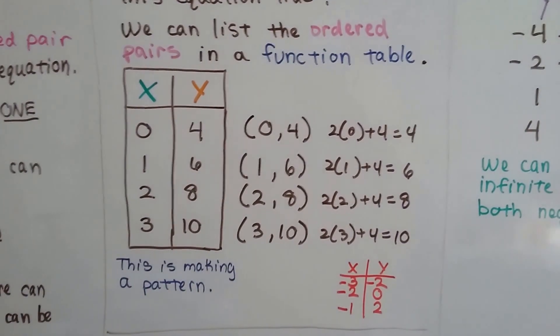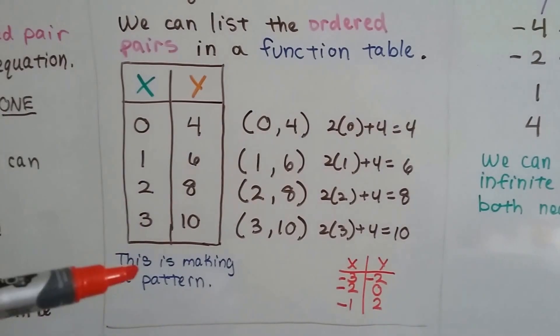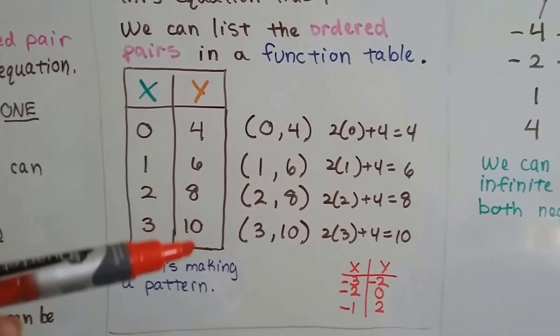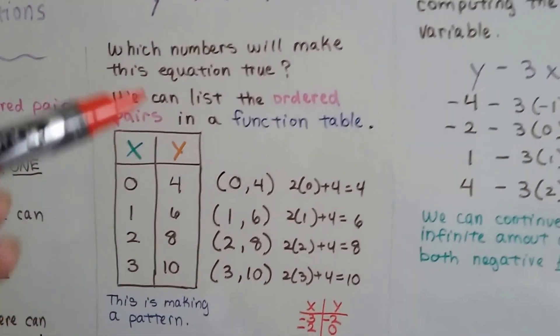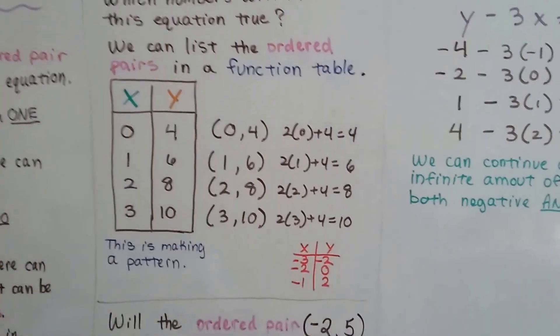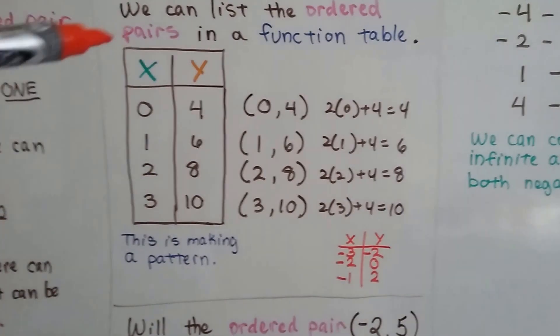Now, do you see what's happening? We're going up by 1, 0, 1, 2, 3. Well, that's what we chose to do. That's what I chose to plug in for the x values. But it's making the y values go up by 2. Now, do you know why it's doing that? 4, 6, 8, 10? Because this x is multiplied by 2. That's why this y is going up by 2. And it can go down by 2 as this goes down by 1.